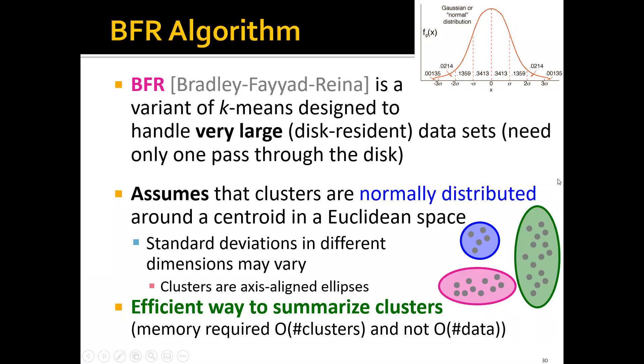Since the BFR algorithm is designed to handle very large datasets stored on disk, it usually needs only one pass through the disk because disk IOs are relatively expensive. One important point is that the BFR algorithm assumes that clusters are normally distributed around a central in Euclidean space, and that standard deviations in different dimensions may vary. Basically, the clusters are axis-aligned ellipses.